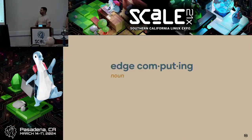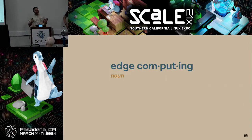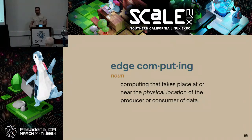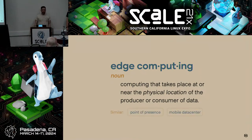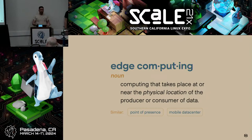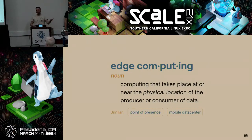Let's talk about edge computing. The dictionary definition is computing that takes place at or near the physical location of the producer or consumer of data. The physical part is really, really important. If you have a fancy data center or one of the CSP data centers, that's an easily solved problem. But in our case, you do have to care. Way before we called it edge computing — which is a much cooler term — around the beginning of the 1990s, any CDN with a point of presence was technically an edge location. You're producing and consuming data at the edge. We just didn't call it that way.